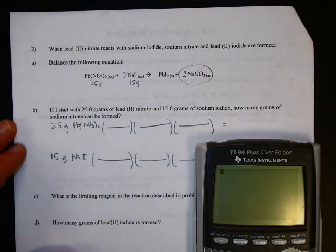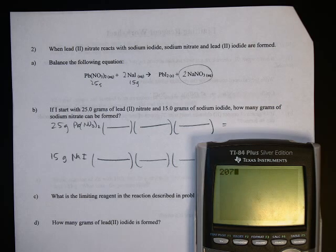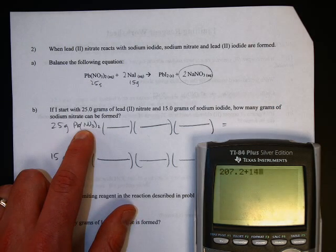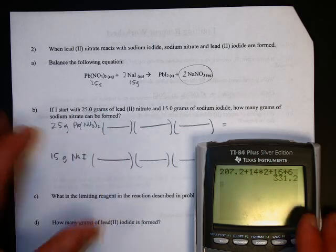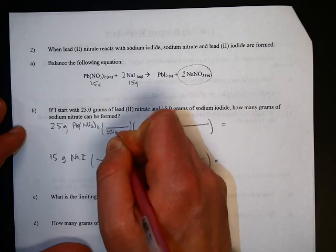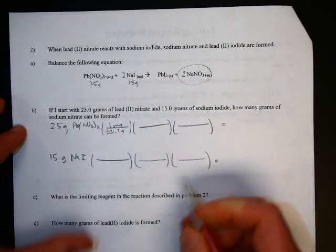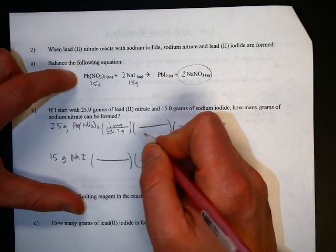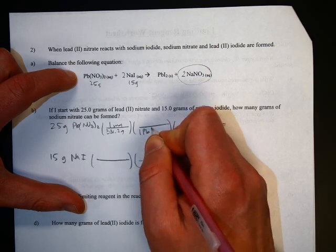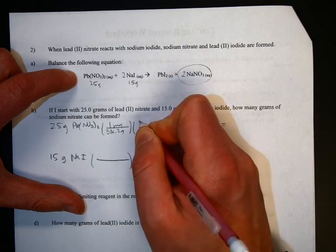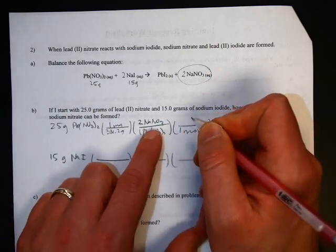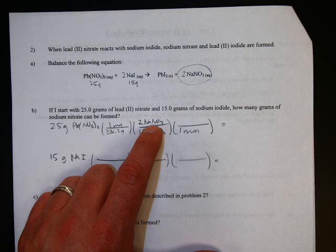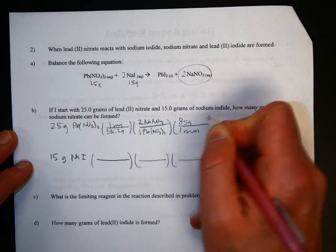Let's see, the molar mass of lead nitrate goes down there. Lead is 207.2 plus 14 times 2 plus 16 times 6. You get 331.2. And let's see, one lead nitrate gives you two sodium nitrates. When you want your answer in grams, you might as well figure out the molar mass of NaNO3. That's 23 plus 14 plus 16 times 3 per mole total of 85 grams.